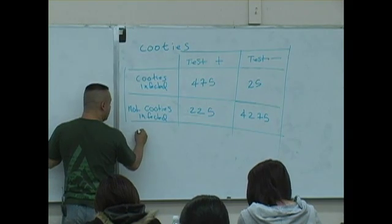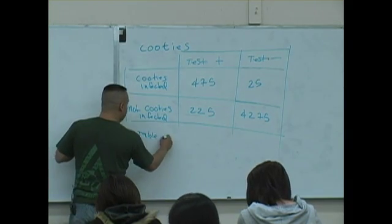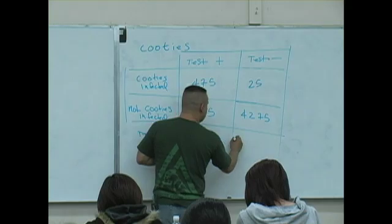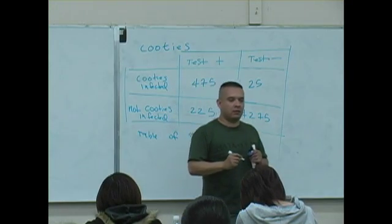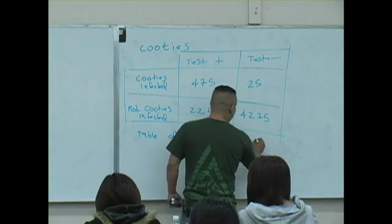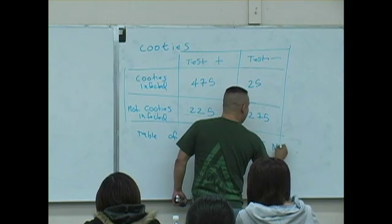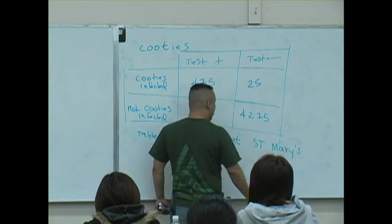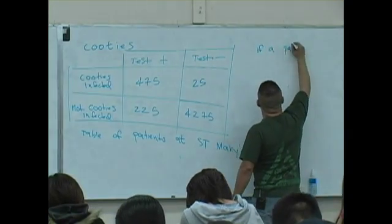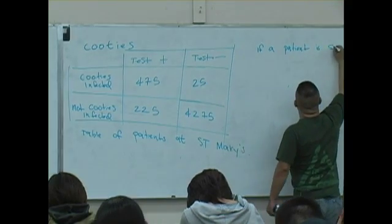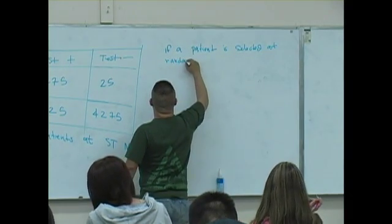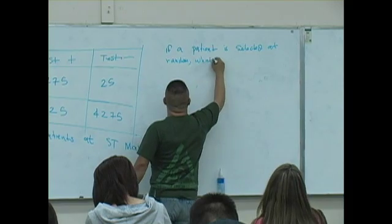This is a table of patients at — what hospital? At St. Mary's, I don't know, at St. Mary's, whatever hospital. Okay, if a patient is selected at random, what's the probability?